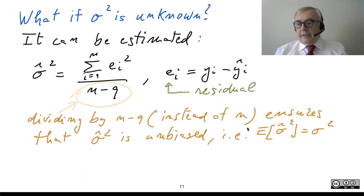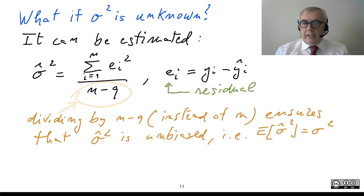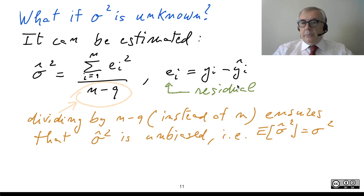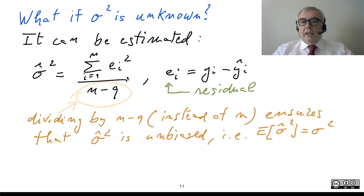We have an important open question: what should we do if sigma-square is unknown? If sigma-square is unknown, it can be estimated from the residuals. Once you have the model, you compute the difference between the observations and the predictions, and then consider this sample estimator.